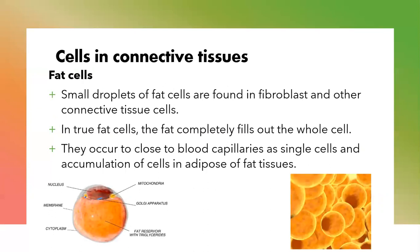We also have the fat cells. These are cells containing small droplets of fat; you can find them in the fibroblasts and other connective tissues. But in the true fat cells, the fat completely fills the whole cell, so the nucleus is pushed close to the cell membrane. They tend to occur close to blood capillaries as single cells, and an accumulation of fat cells forms adipose tissue — a large collection of fat cells.